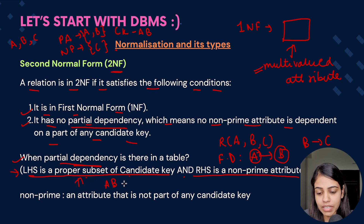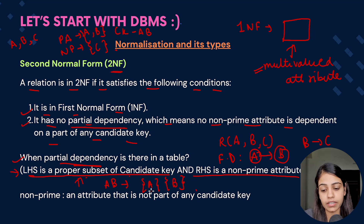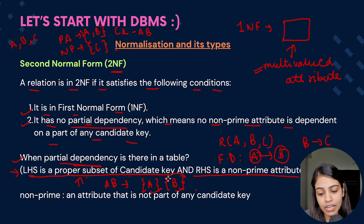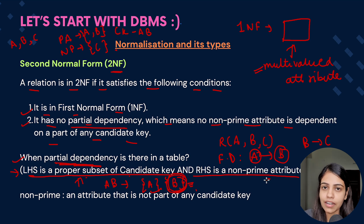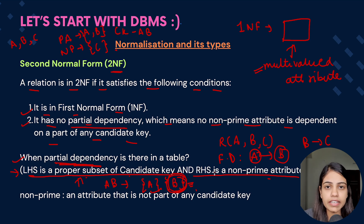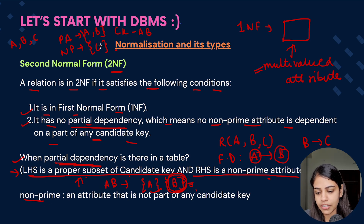If a proper subset of AB is considered, it will be A and B individually — it won't include AB combined, because that is a subset, not a proper subset. So whenever we talk about proper subset it will only contain A and B and not AB. Whenever there is a partial dependency, a part of candidate key is determining a non-prime attribute. So if a given table is not in first normal form, or if there is some partial dependency, we can say that the table is not in second normal form. A non-prime attribute is an attribute that is not part of a candidate key.